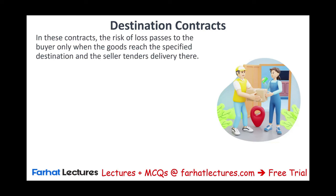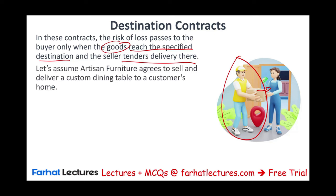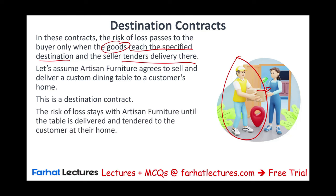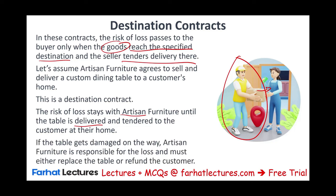In a destination contract, the risk of loss passes to the buyer when the goods reach the specified destination and the seller tenders delivery — meaning physically offers the goods. For example, a furniture store agrees to sell and deliver a custom dining table to a customer's home. The risk of loss stays with the furniture store until the table is delivered to the customer's home. If the table is damaged on the way, the furniture store is responsible and must replace it or refund the customer.